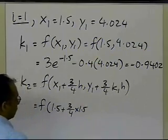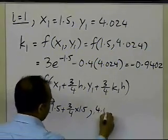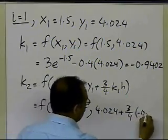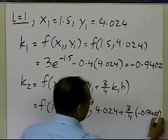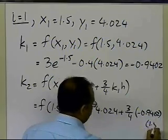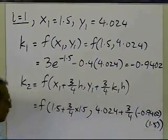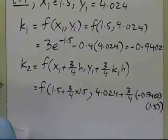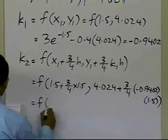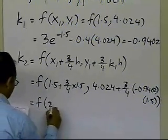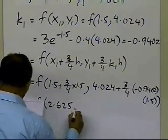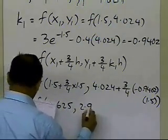so y1 is 4.024 plus 3/4 times k1, which I just calculated as minus 0.9402, times h which is 1.5. So all the arguments for the function f to be calculated for k2 are known. What do these arguments turn out to be? They turn out to be 2.625 and 2.966.